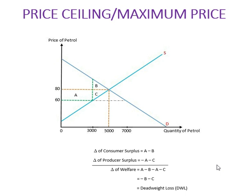To help you understand easily, I made a graphical presentation of this price ceiling. I take petrol as the product. On the y-axis I put the price of petrol, and on the x-axis I put the quantity of petrol. In the graph you can see the demand curve and the supply curve, with the equilibrium point where the price of petrol is 80 and the quantity is 5000 liters.